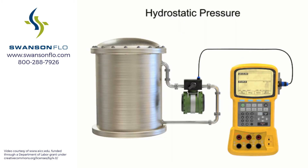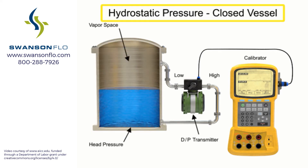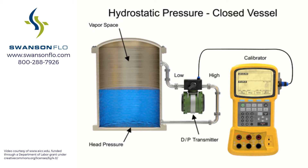Hydrostatic pressure can only be accurately calculated from an open container. Within a closed or pressurized vessel, the vapor space above the column of material adds pressure and results in inaccurate calculated values. The vessel pressure can be compensated for by using a differential pressure transmitter.